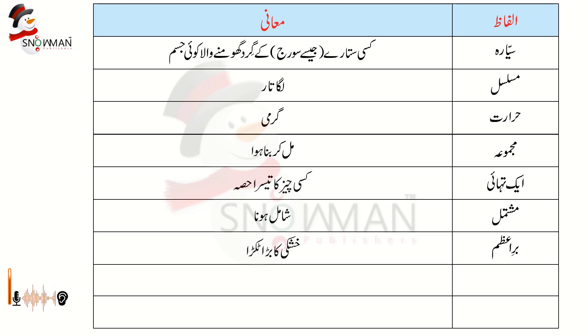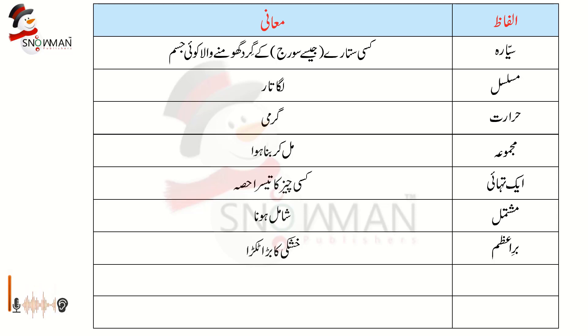جب وقت آئے گا تو برِ اعظم کے ساتھ ساتھ برِ صغیر کی بات بھی کریں گے — برِ صغیر یعنی چھوٹا ٹکڑا جو برِ اعظم کا ہی حصہ ہوتا ہے مگر الگ سا ہوتا ہے، اس لیے اسے برِ صغیر کہتے ہیں۔ اگلے الفاظ ہیں: ساخت یعنی بناوٹ، وسیع یعنی بہت بڑا پھیلا ہوا، اجسام یعنی جسم کی جمع — باڈیز، کوئی چیز۔